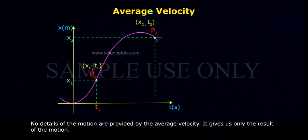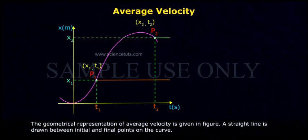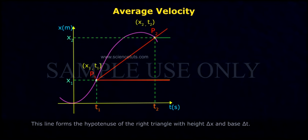It gives us only the result of the motion. The geometrical representation of average velocity is given in the figure. A straight line is drawn between initial and final points on the curve.